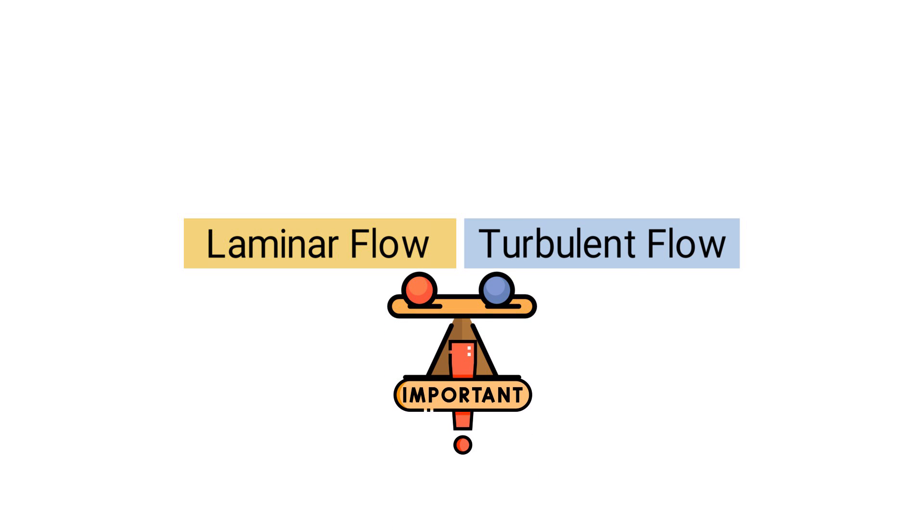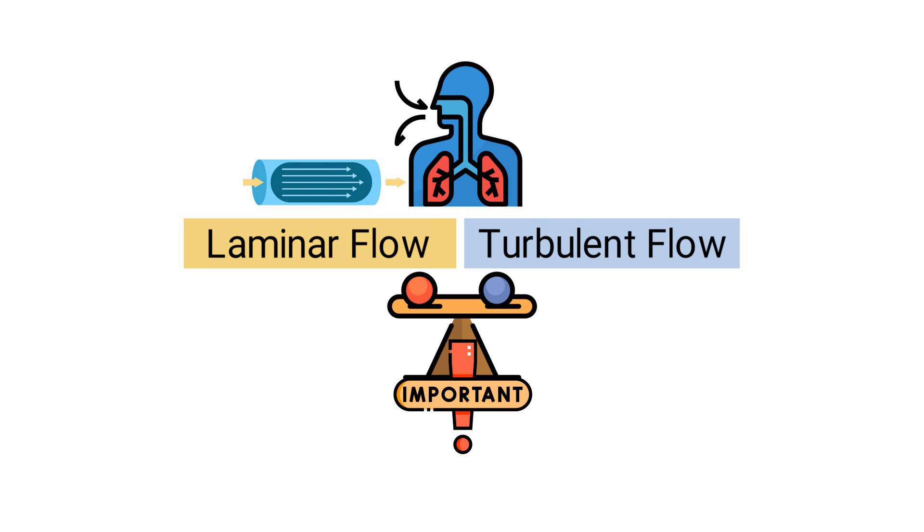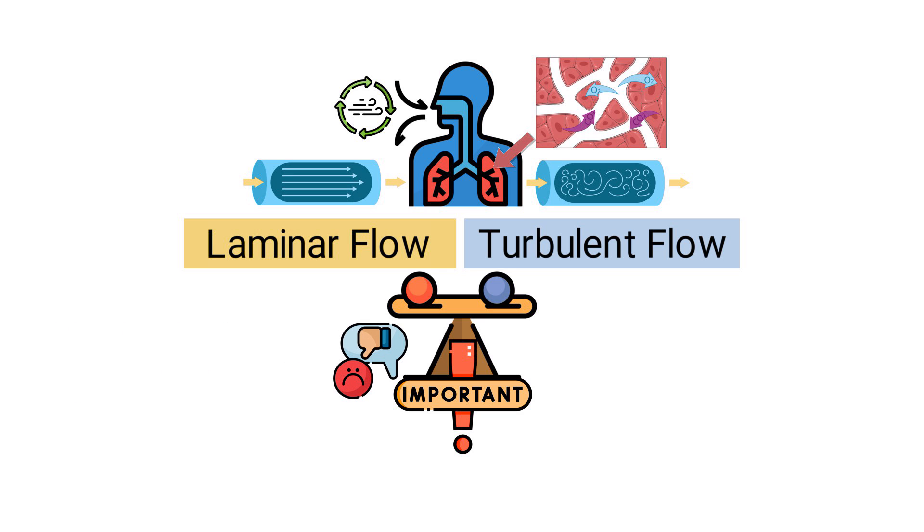The balance between laminar and turbulent flow in the lungs is crucial for optimal respiratory function. During normal breathing, both types of flow work together to ensure efficient ventilation and gas exchange. Changes in this balance can have significant implications for lung health.